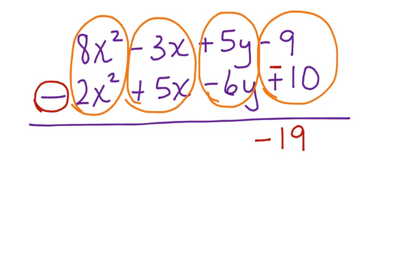5y minus 6y, but it's not minus 6y because, again, this has to get applied all the way over here, too. Double negatives become a positive. 5y plus 6y is 11y.